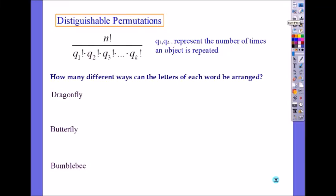A permutation that's called distinguishable permutation. So here what happens is, let's look at an example.